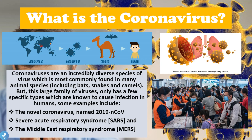So what is the coronavirus? Coronaviruses are an incredibly diverse species of virus which is most commonly found in many animal species including bats, snakes, and camels. But this large family of viruses only has a few specific types which are known to cause infection in humans. Some examples are the novel coronavirus, which began as the outbreak in Wuhan, China.